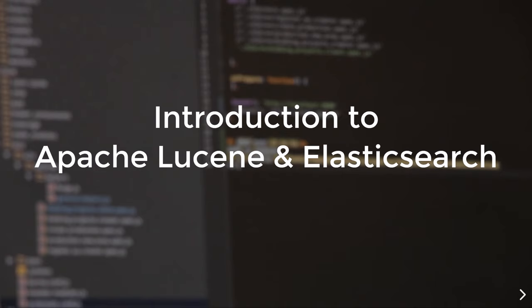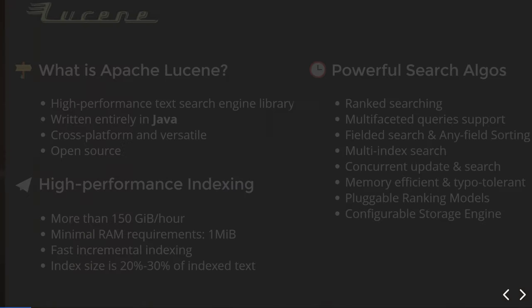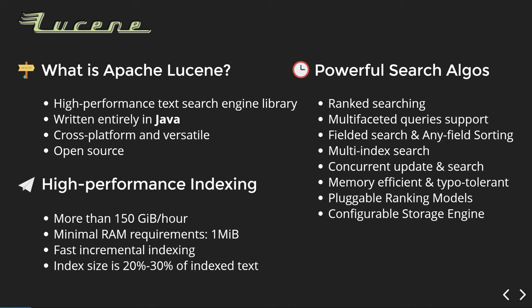In this talk we're going to cover Apache Lucene and Elasticsearch. What is Apache Lucene? In a nutshell, it's a high performance text search engine written in Java, cross-platform and open source. It can ingest up to 150 gigs an hour with minimal requirements, allows fast incremental indexing, and stored data is up to 80% smaller compared to the indexed text. It also offers powerful search algorithms such as ranked searching, multifaceted queries, multi-index search, and concurrent update and search. It's also a pluggable and very configurable system.